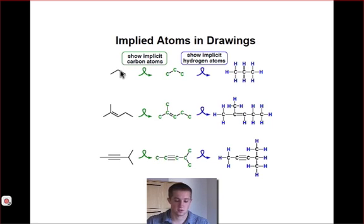Take, for example, the upper left structure. We can see we have a vertex point right here, and even though it's not labeled as being carbon, we could still assume it to be a carbon atom. And then if we look at each free end, we can also see that those are not labeled either, but those are also carbon atoms. And this is shown in the drawings on the right.